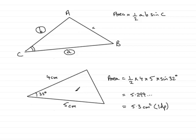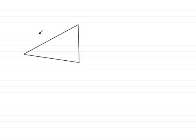Let's try another example. This time the example we're going to do will be in radians. Let's suppose that we've got a triangle — not drawn to scale. Let's suppose that this side is 8.3 metres and this side here is 6.1 metres. We have our two sides, and we're looking for the included angle — this one, in between these two sides. This angle, let's assume, is 0.9 radians.